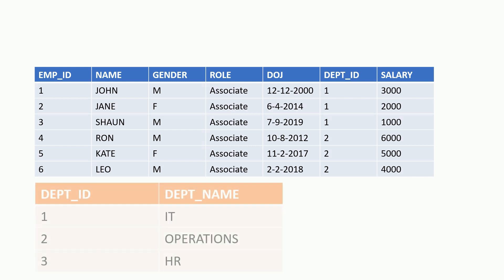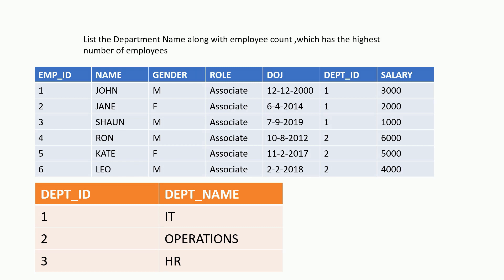In the next question, we are introducing our second table, which has three rows: IT, Operations, and HR. Again, this is just sample data and the actual table will have many more departments, so the queries you write should be generic. In the second question, we have to find the department name which has the highest number of employees and display its employee count along with it. Let's say IT has the highest number of employees — the answer should look like this.